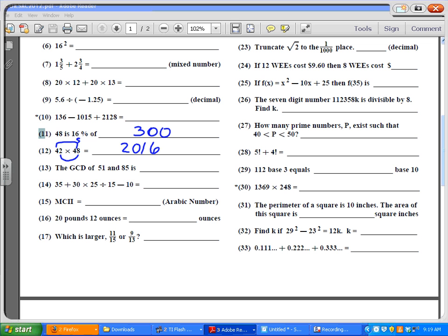Greatest common divisor for 51 and 85. The difference there is 34, and 34 doesn't go into either one of those, but factors of 34 will. 17 in this case. 17 times 3 and 17 times 5, so 17 is your answer.